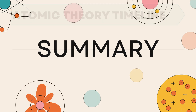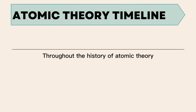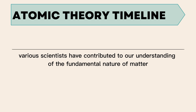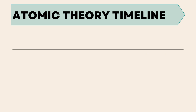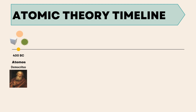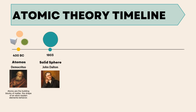Let us sum up. Throughout the history of atomic theory, various scientists have contributed to our understanding of the fundamental nature of matter. In 400 B.C., Democritus proposed the concept of atomos, suggesting that atoms are the basic building blocks of matter and the shape of an atom explains the behavior of elements. In 1803, John Dalton introduced the solid sphere model, positing that an atom is a solid, indivisible sphere.